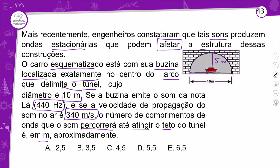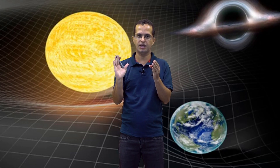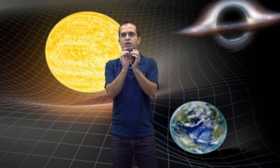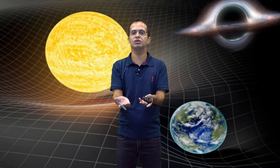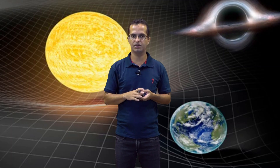No passado, motoristas adentravam o túnel e começavam a buzinar pelo simples prazer de ouvir o eco. Mais recentemente, constataram que tais sons produzem ondas estacionárias que podem afetar a estrutura dessas construções. O carro está com sua buzina localizada exatamente no centro do arco que delimita o túnel, cujo diâmetro é 10 metros — portanto, 5 metros para cada lado.